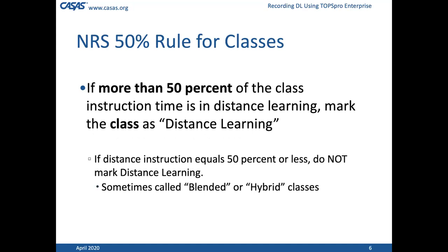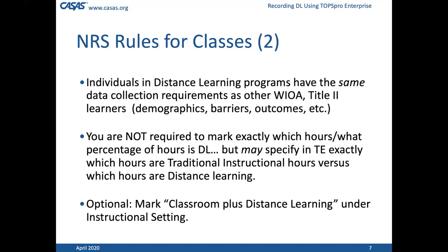Here's the one rule: if more than 50% of the class instruction time is in distance learning, you need to mark the class as distance learning — just a little checkbox. If the opposite is true — 50% or less — which we sometimes call blended or hybrid classes, you don't mark it. It's pretty straightforward.